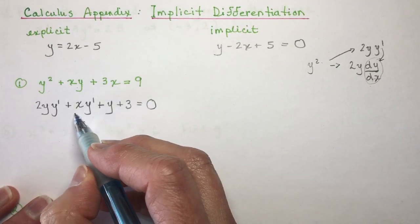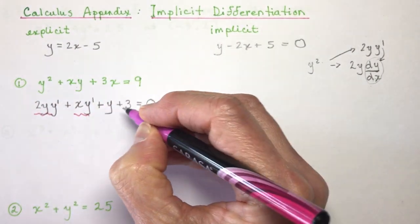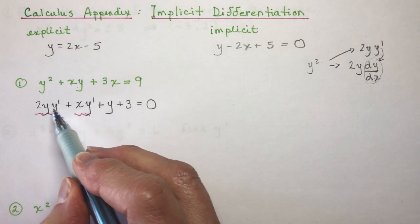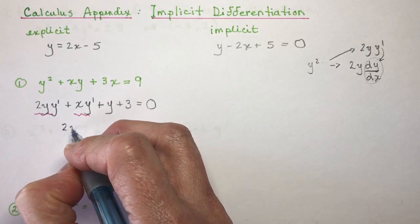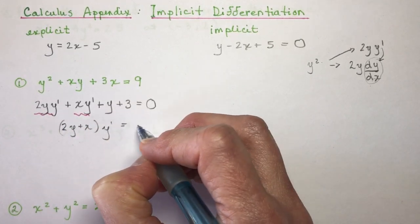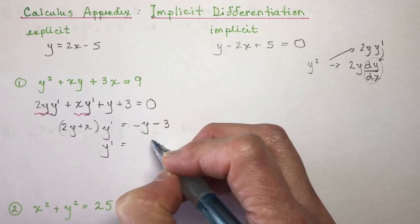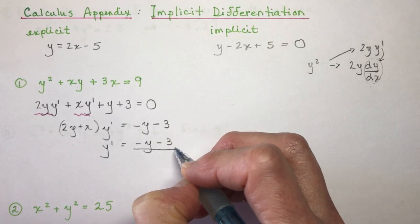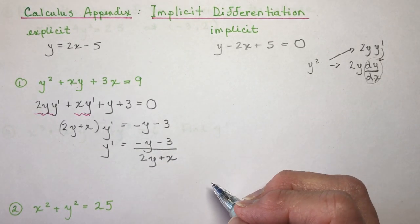The last step is to isolate anything that has a y′. Collect the y′ terms and move everything else to the other side. Factor out the coefficients of y′, giving (2y + x)·y′ = −y − 3. Therefore y′ = (−y − 3) / (2y + x).